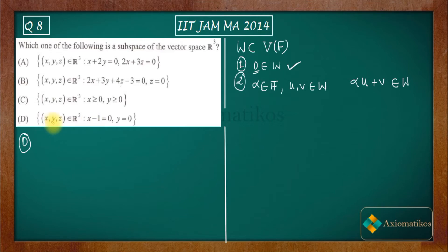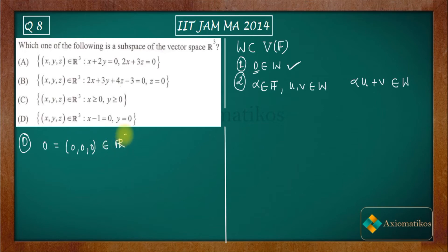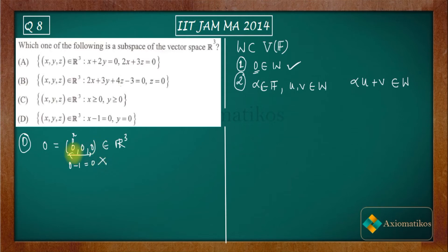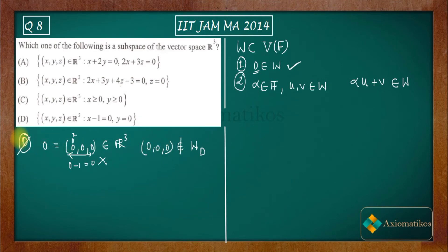In option D, all elements inside this subset satisfy two conditions. Now if you choose the zero vector from your vector space R cube — which is (0,0,0) — check whether this zero element belongs to subset D or not. The condition is x minus one should be zero, but zero minus one is not zero. That means the zero element does not belong to WD. Therefore it is not a subspace, since it does not satisfy condition one.